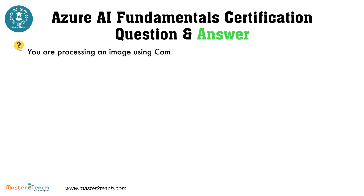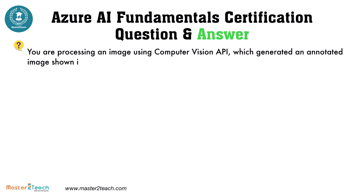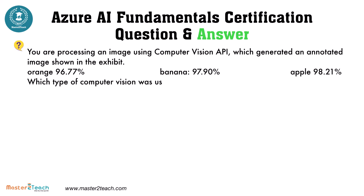You are processing an image using the Computer Vision API, which generated an annotated image shown in the exhibit. The API returned labels: Orange at 96.77%, Banana at 97.90%, and Apple at 98.21%. Which type of computer vision was used?